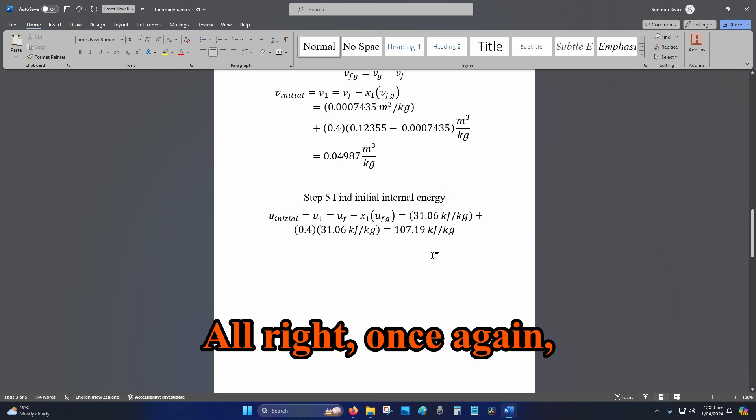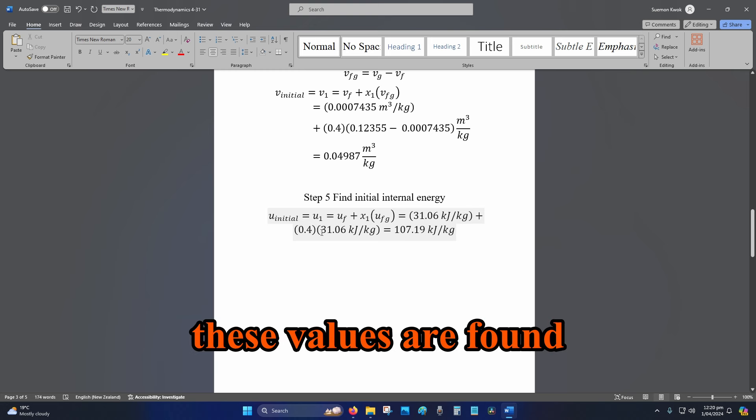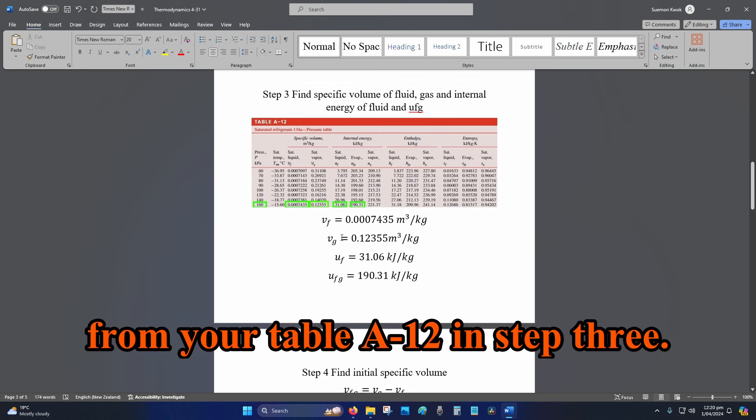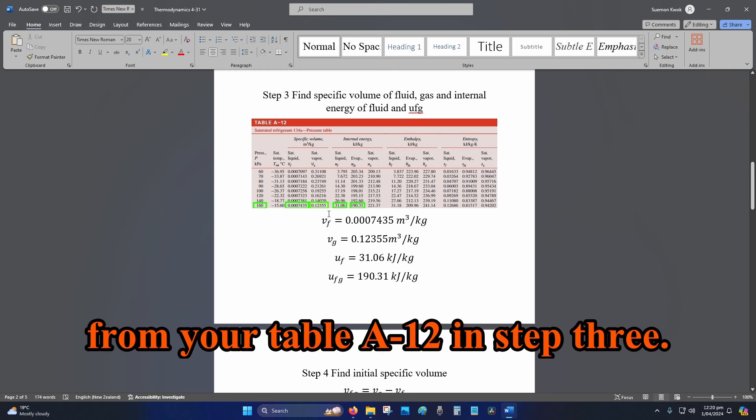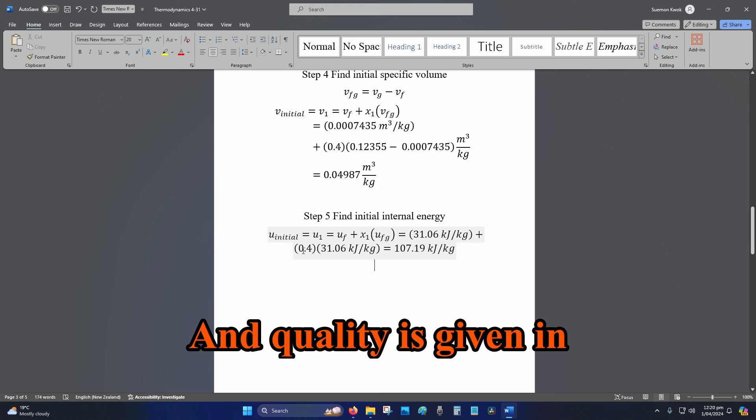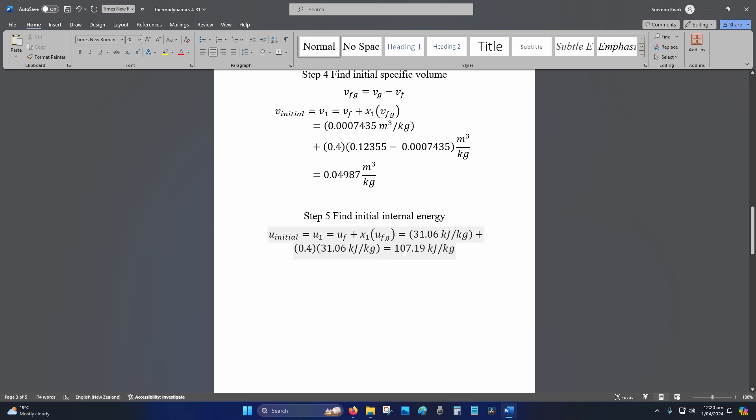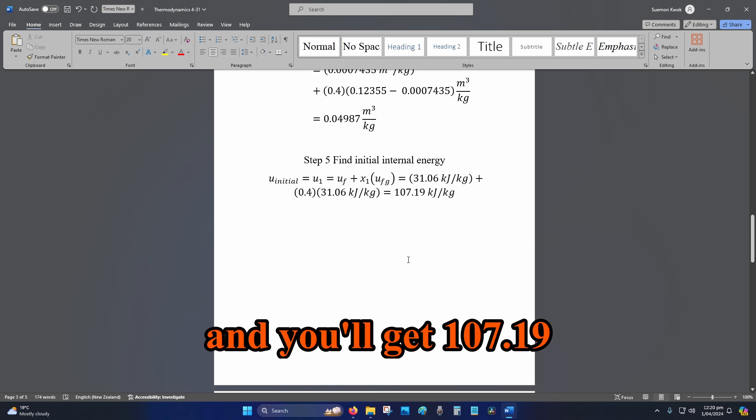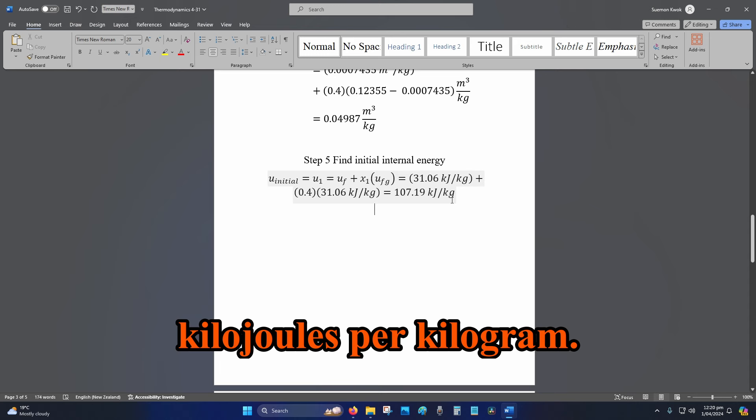Once again, these values are found from your table A-12 in Step 3. Quality is given in the question. Plug and play, and you'll get 107.19 kJ/kg.